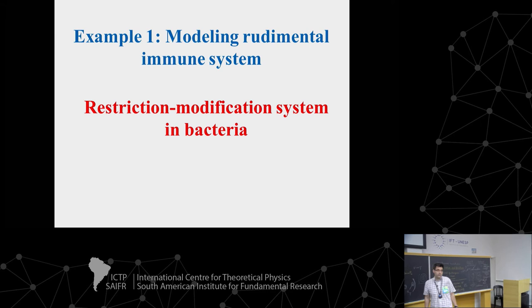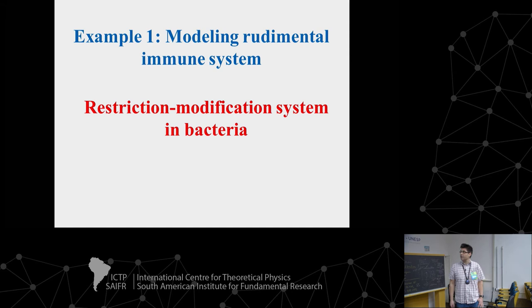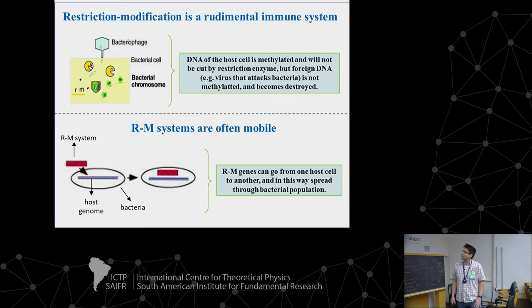This simplified example comes from our research on restriction modification (RM) systems — how they establish themselves in bacteria. RM systems are bacterial immune systems. They consist of two parts: a restriction enzyme (which cuts DNA) and a methyltransferase. The restriction enzyme cuts any DNA with the appropriate recognition sequence, unless that sequence is methylated. RM systems have large applications in biotechnology, having been used for decades to cut DNA at specific sites.